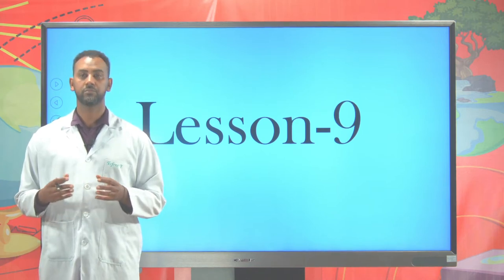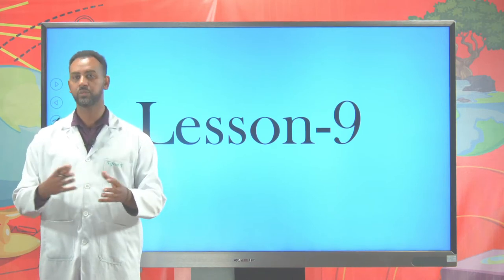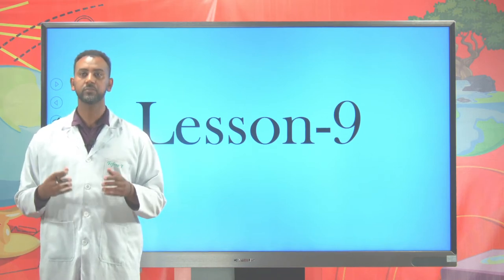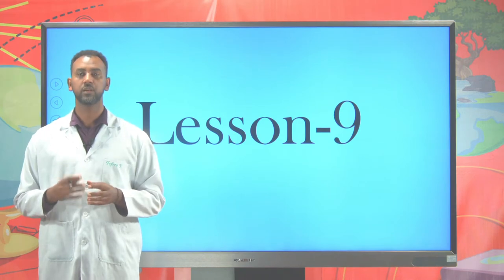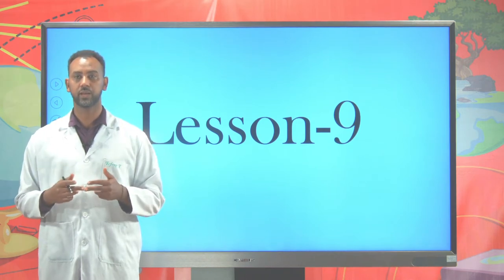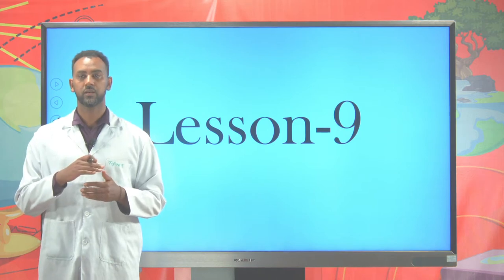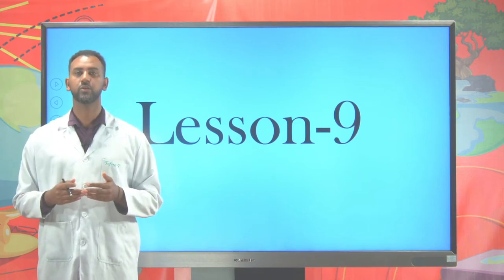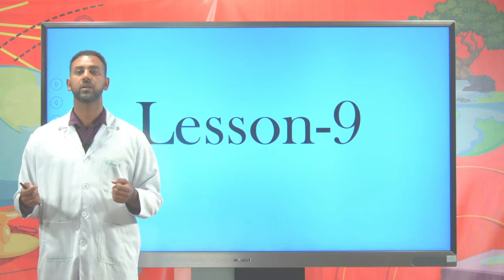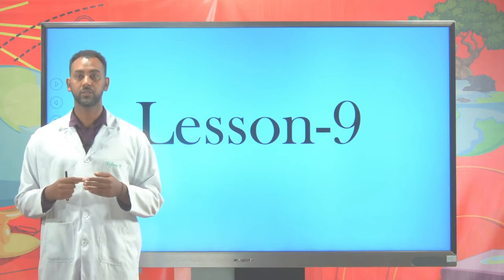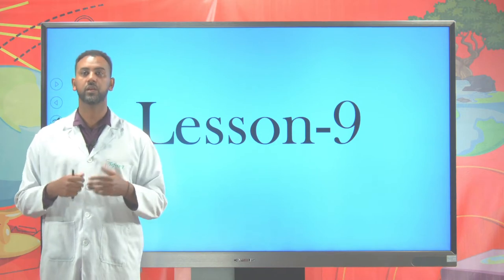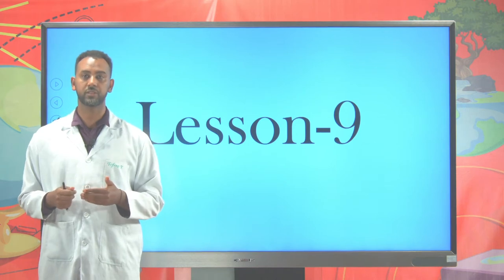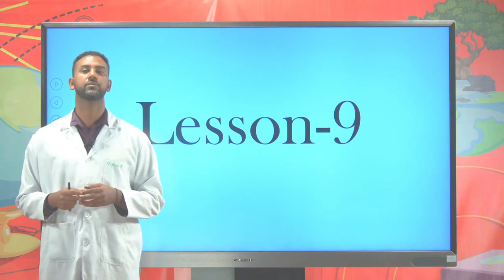Collision is the impact between two or more objects and it's a common phenomenon. There are different types of collision. Depending on the lines of action, we can classify collision as head-on and glancing collision. Head-on collision is a collision between two objects having the same lines of action before and after collision, whereas glancing collision has different lines of action before and after collision.